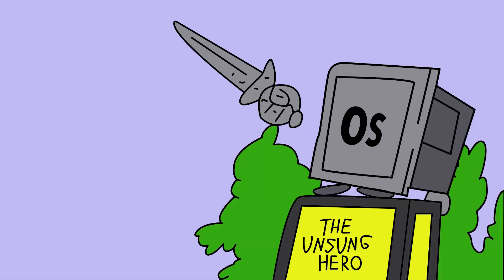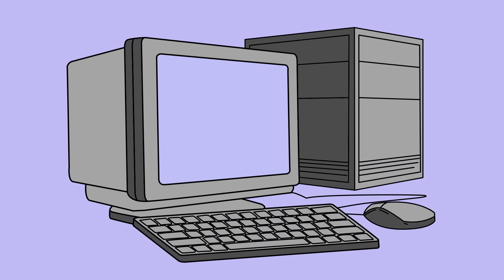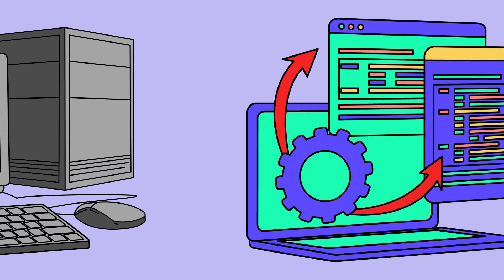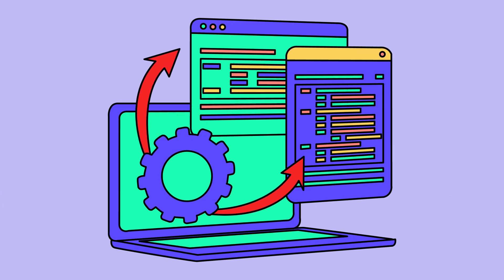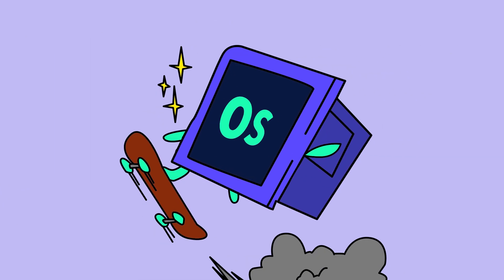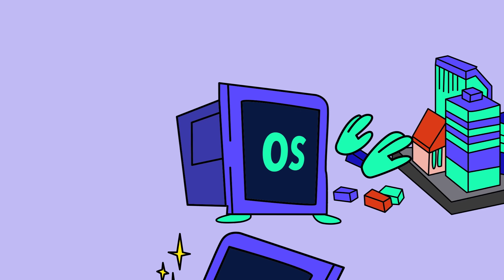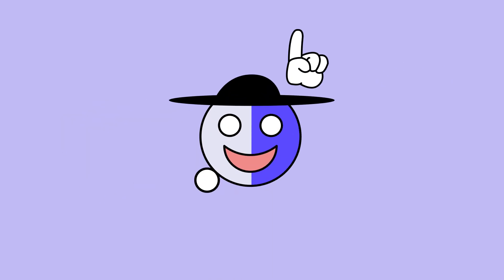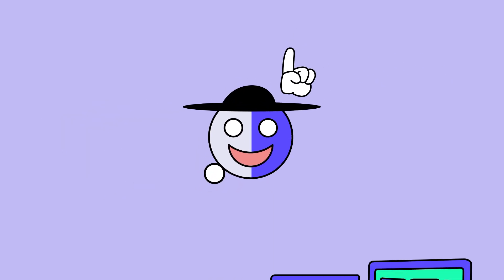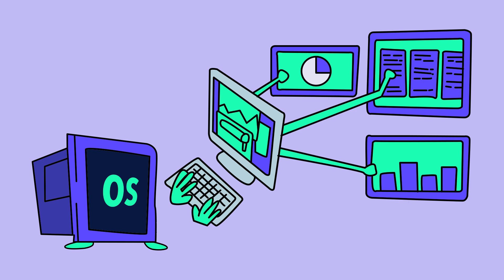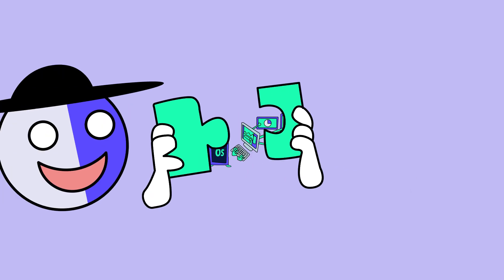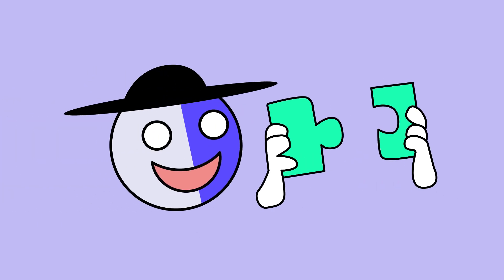The OS is the unsung hero, managing your computer's hardware and software resources like a pro. Think of the OS as the ultimate city planner — it doesn't just sit there, it actively manages everything. Let's break down its job.